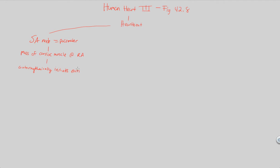Every time the heart beats, it does so on its own without you having to tell the heart to beat — that's why we say auto-rhythmically. Not only is it done on its own, but it's done in a very specific rhythm. This auto-rhythmic initiation of the heartbeat is done via this mass of cardiac muscle known as the SA node, otherwise known as the pacemaker.